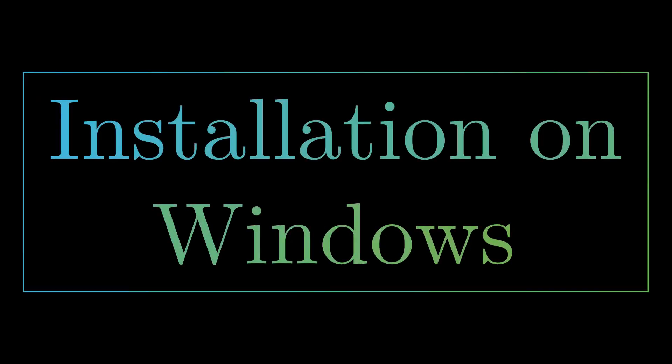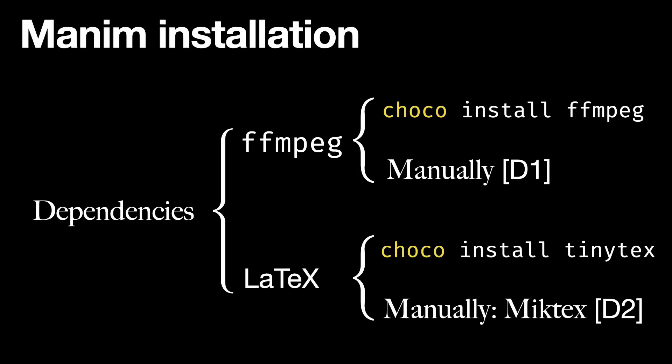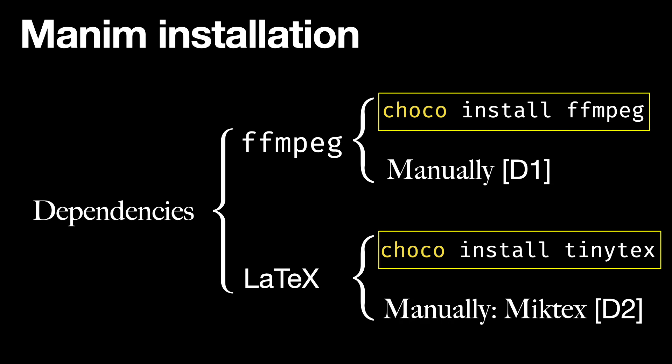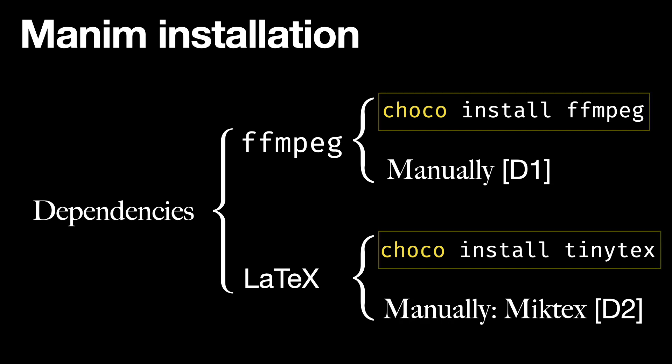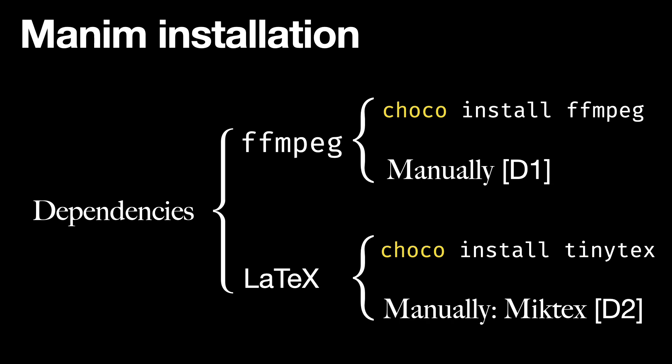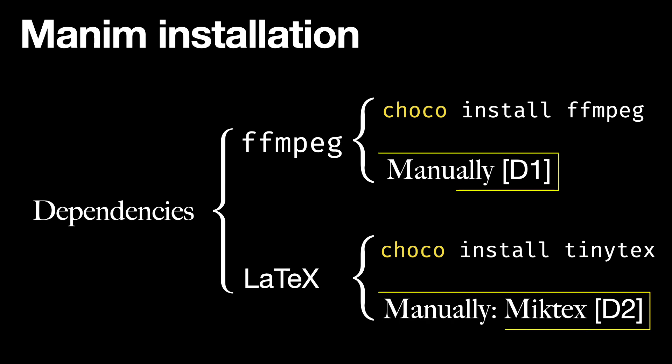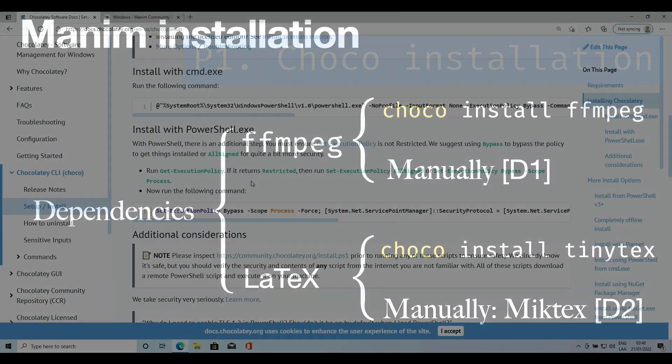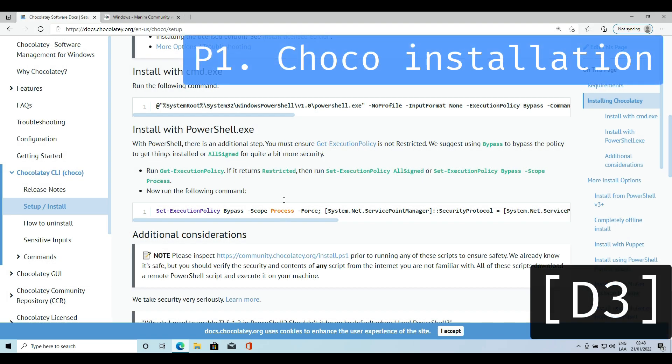In this video we are going to perform the lightest installation possible. The first thing we will do is install the dependencies — there are two of them: ffmpeg and latex. In order to install the dependencies we need to install Choco or Scoop; I will use Choco. In case Choco is not available in your country, I will also indicate the manual installations. Without Choco, go to this page and go through the installation steps.